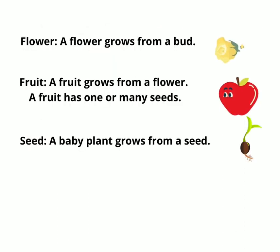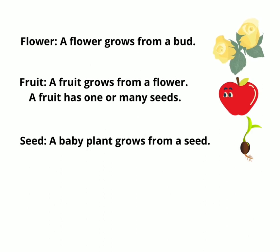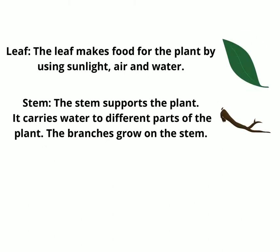Parts of a plant: roots, stem, leaves, flowers, and fruits. A flower grows from a bud. A fruit grows from a flower. A fruit has one or many seeds. A baby plant grows from a seed. The leaf makes food for the plant by using sunlight, air, and water.